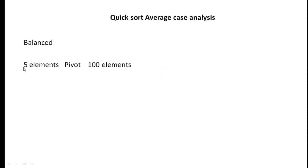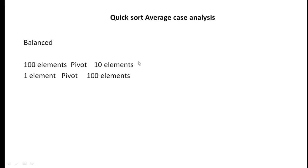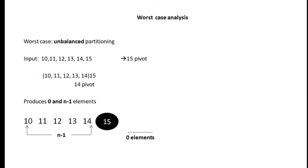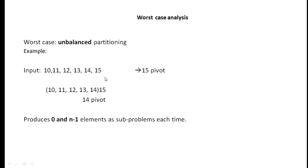An example of the average case could be having 5 elements to the left, the pivot, and 100 elements to the right — or 100 elements to the left and 5 to the right. Another example: 100 elements to the left, pivot, and 10 elements to the right. Even having just 1 element to the left with a pivot and remaining elements still gives O(n log n). The only case where we do not get O(n log n) is when sub-problems are 0 and n-1 in every iteration.